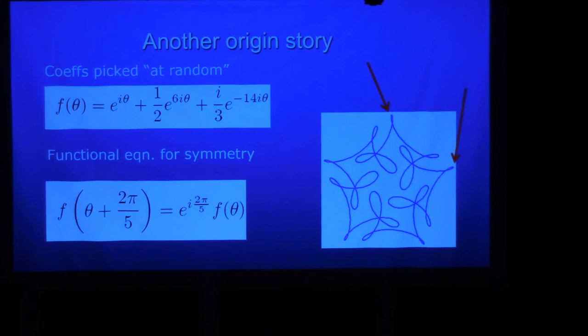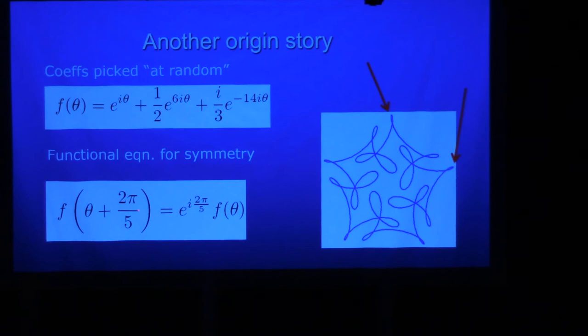Here's the functional equation for that symmetry. The left-hand side says let's advance time by a fifth of a full period, two pi over five. When you do that, you should get back the original thing you get but multiplied by this rotating factor. So that multiplication factor is a rotation through 72 degrees. So you start at the red arrow, you advance time and that is the same as rotating that point to the second red arrow there. How do you solve that functional equation?